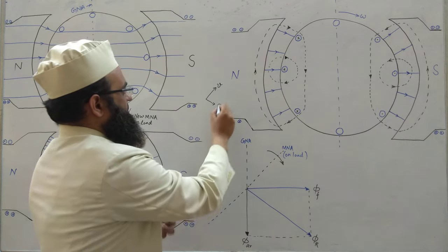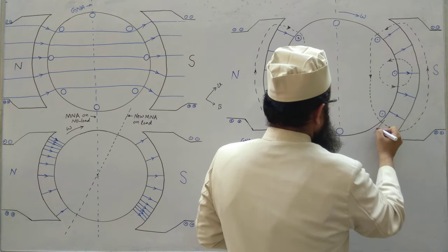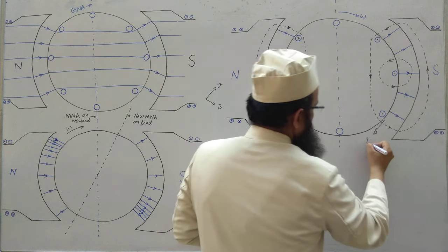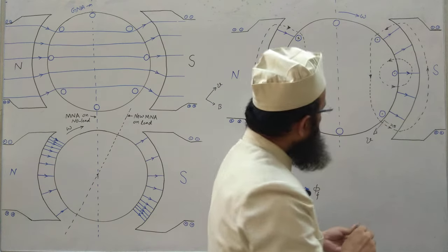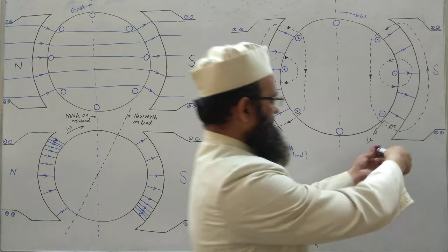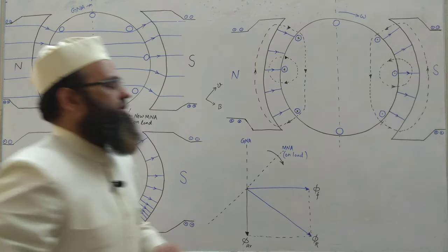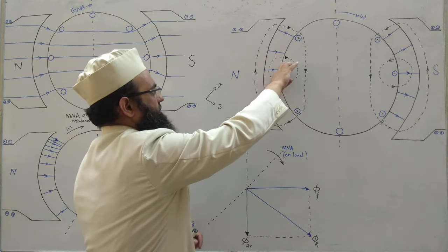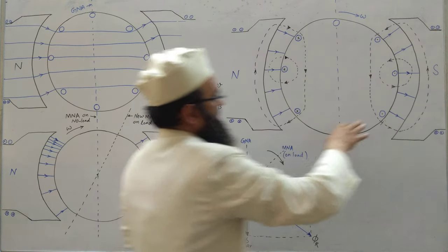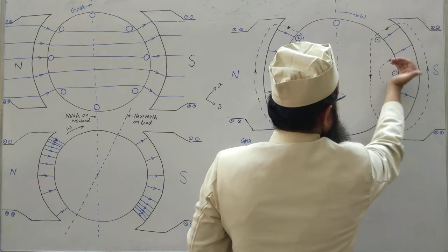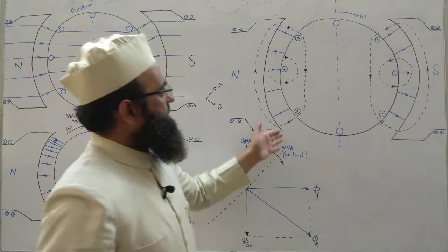Now the rotor is rotating in the clockwise direction, so at any point we can take the tangential velocity V and B perpendicular to it. Taking the direction V cross B — into the plane gives a cross, out of the plane gives a dot. So every conductor on one side has a dot and on the other side a cross. The corresponding flux direction from right-hand curling of the fingers is as shown.